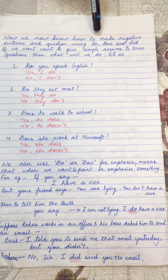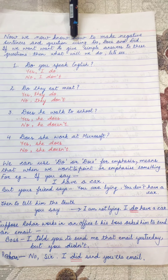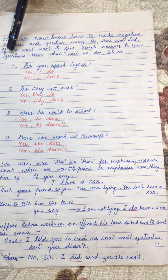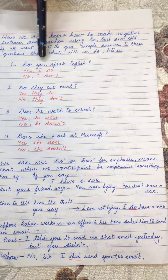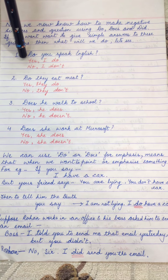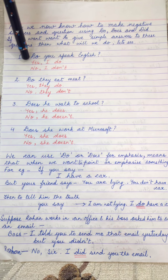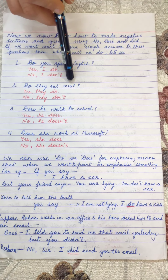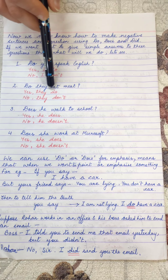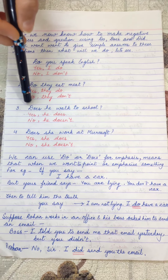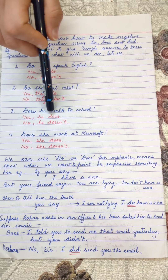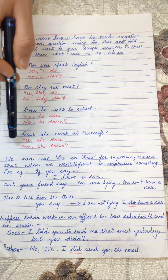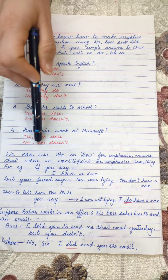Now we know how to make negative sentences and questions using do, does and did. If we want to give simple answers to questions, we can answer either yes or no. 'Do you speak English?' — Yes, I do. No, I don't. 'Do they eat meat?' — Yes, they do. No, they don't. 'Does he walk to school?' — Yes, he does. No, he doesn't. 'Does she work at Microsoft?' — Yes, she does. No, she doesn't.